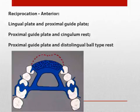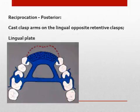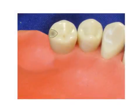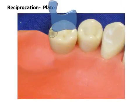Anteriorly, reciprocation may be provided by a lingual plate and proximal guide plate. Other options include a proximal guide plate and either a single arm rest or disto-lingual ball-type rest. Posterior reciprocation may consist of cast clasp arms on the lingual, opposite the retentive clasps, or a lingual plate.